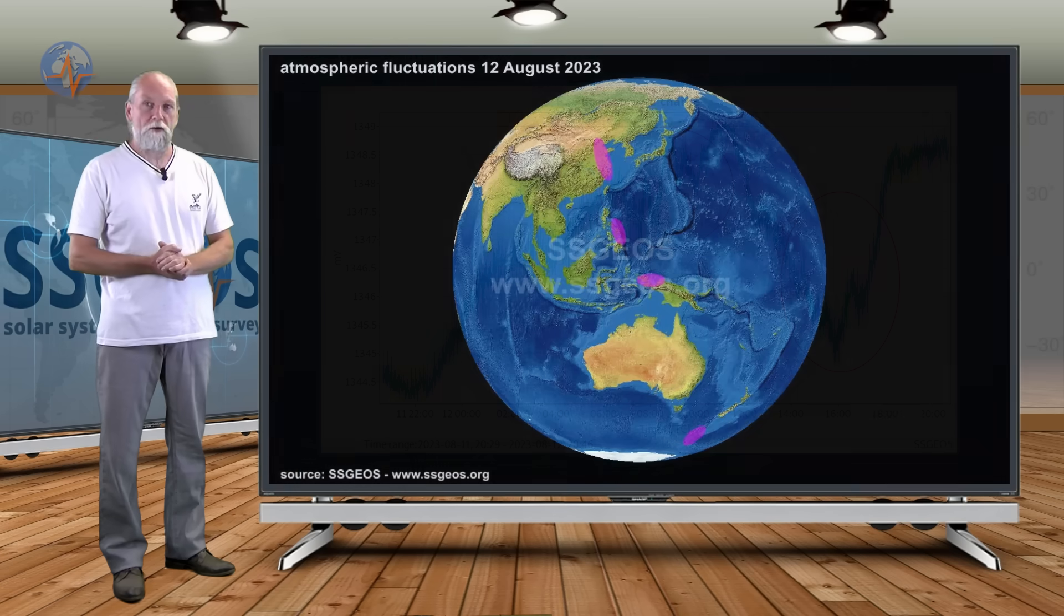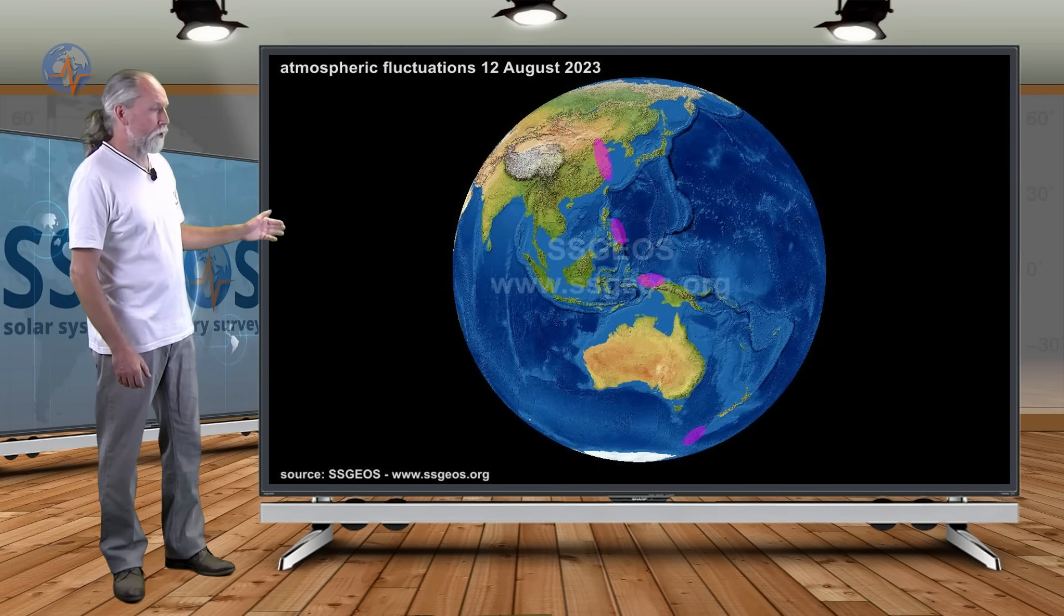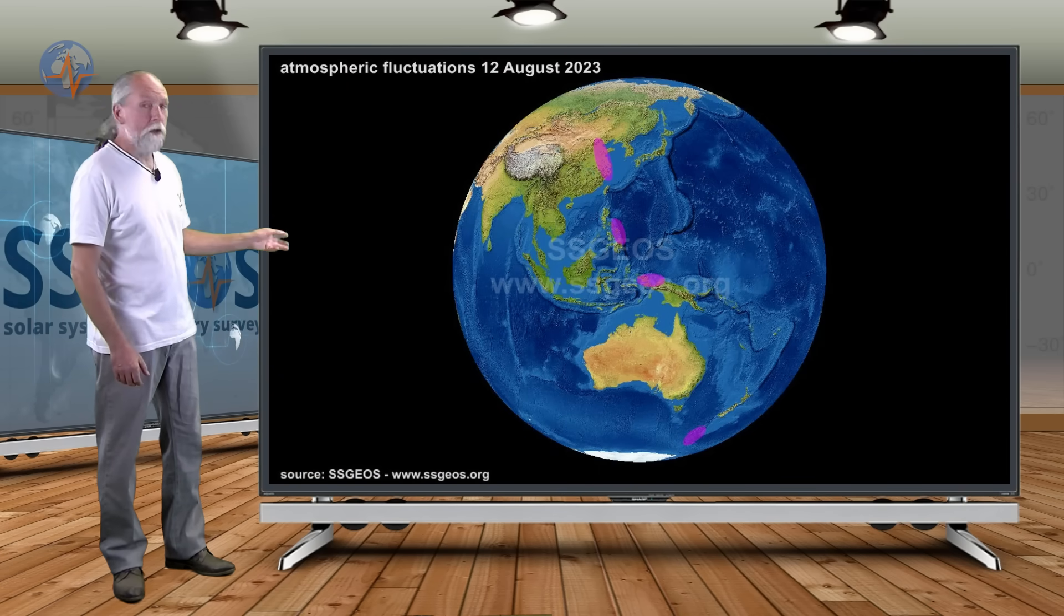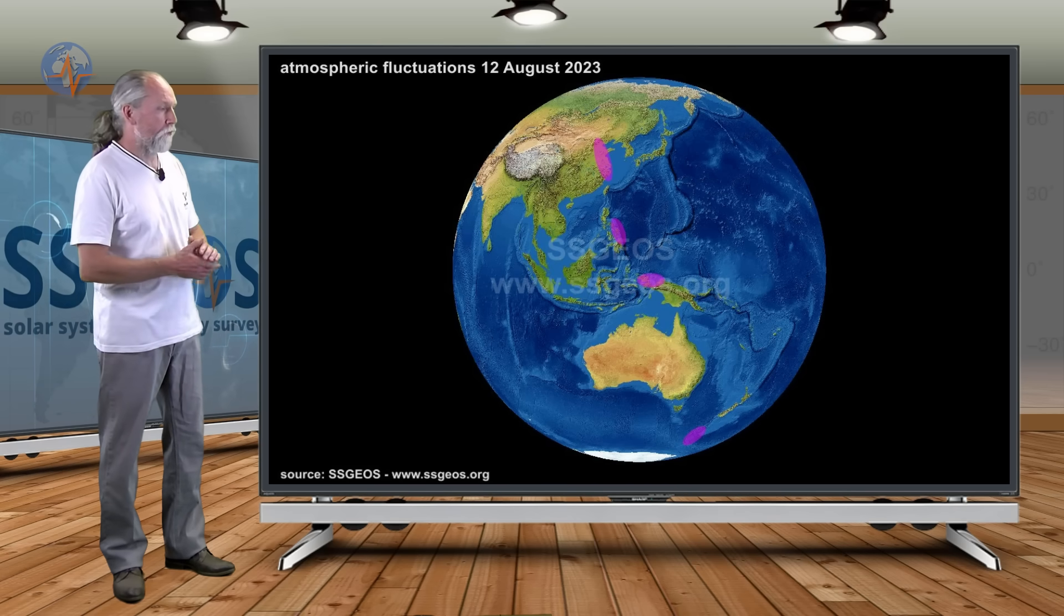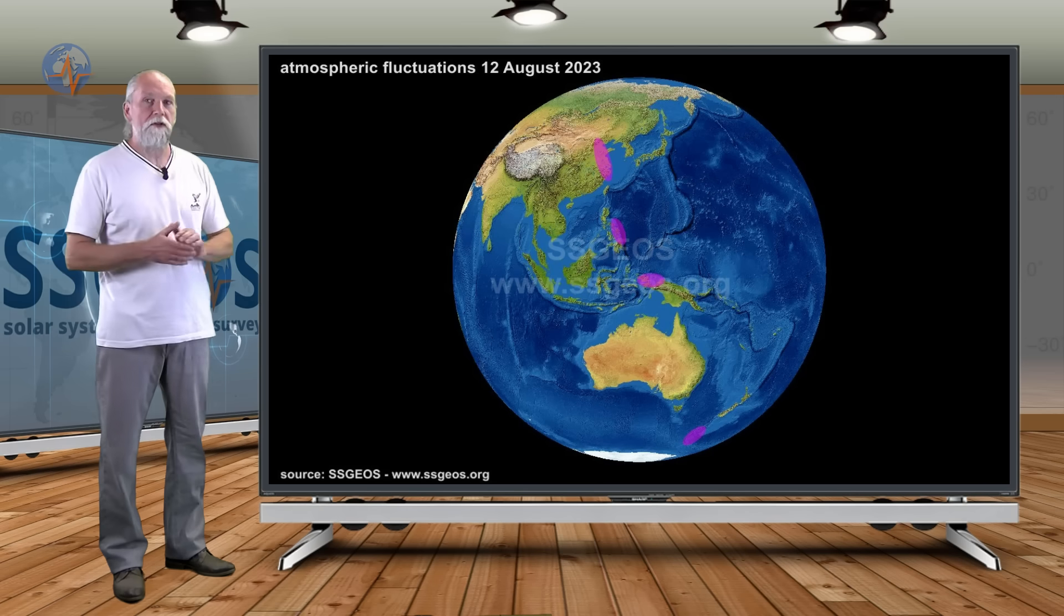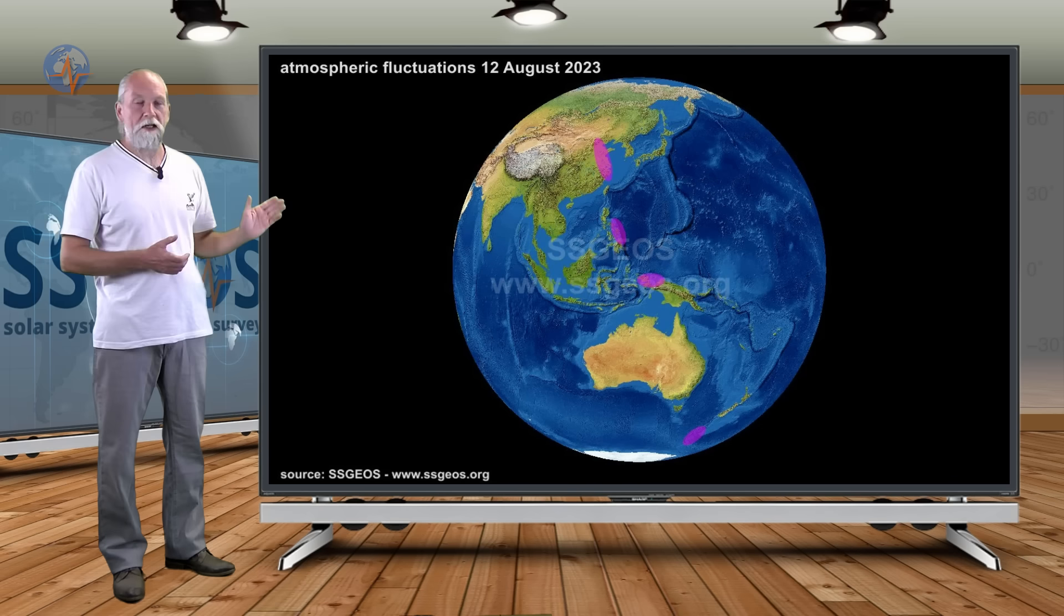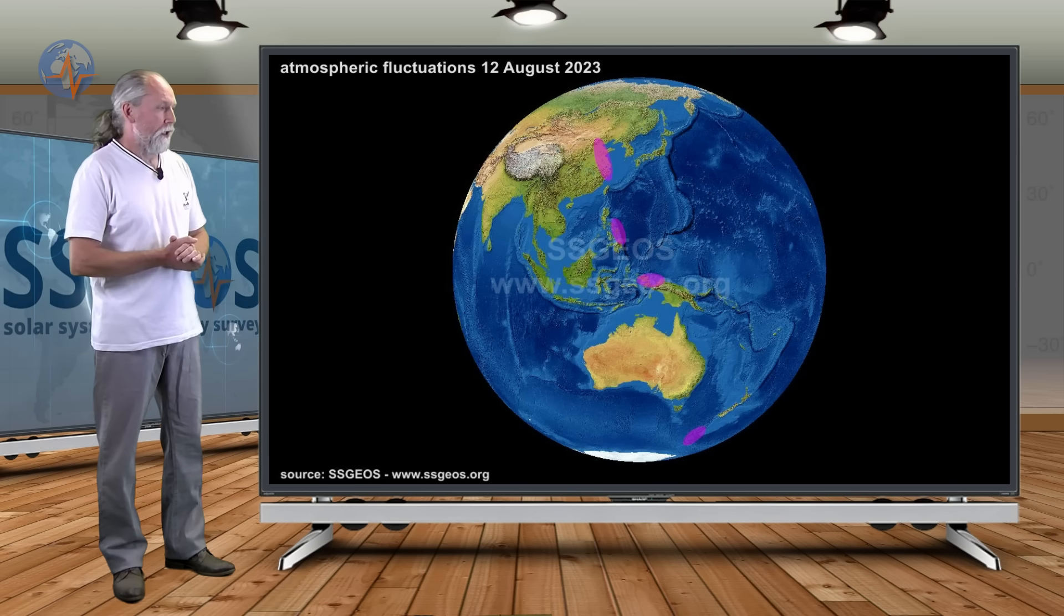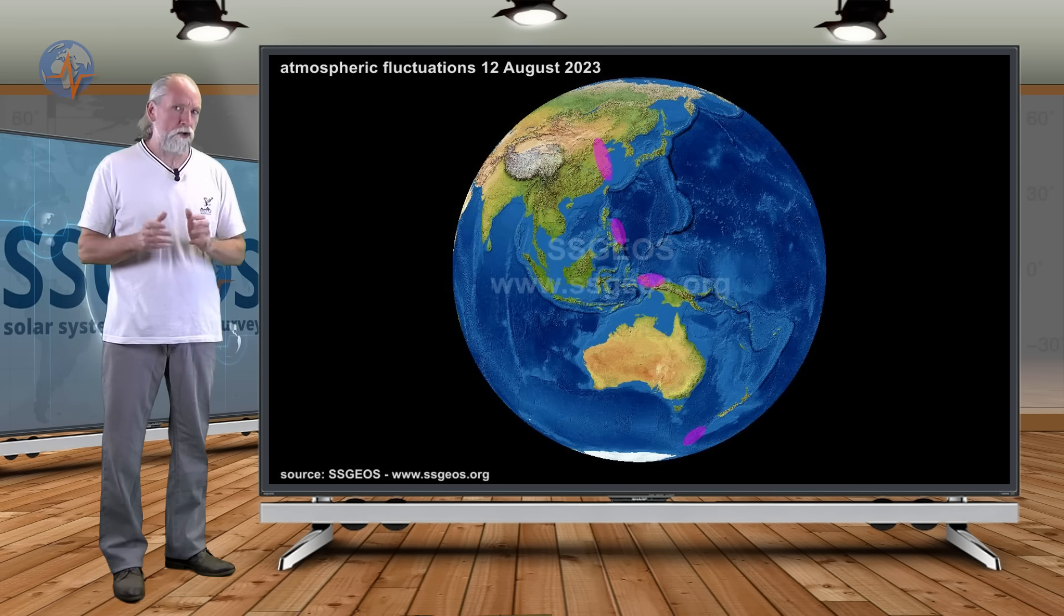And later on the 12th, we had a very strong fluctuation marking on the West Pacific. And that is Papua New Guinea to the North, the Philippines, maybe a bit of Eastern part of Indonesia. And further to the North, Taiwan, maybe even Eastern part of China. Of course, if it's a bit to the East, to the West, it could include Japan. And we have to wait and see. These are the strongest fluctuations so far.